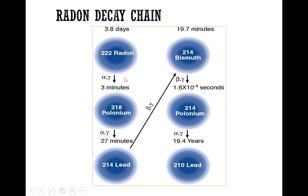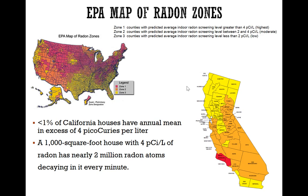Zooming in on radon's radioactive decay: once it reaches radon, within a very short time it becomes polonium, then lead, then bismuth, then polonium again, and then lead. From radon to lead there are multiple decay products with half-lives of 3 minutes, 27 minutes, 20 minutes, less than a second, and finally 20 years. During all of these decays, alpha, alpha, beta, and alpha particles are released, including some gamma. Because of these very fast half-lives, radon accumulating in a basement can cause significant radiation exposure to lung tissue very quickly.